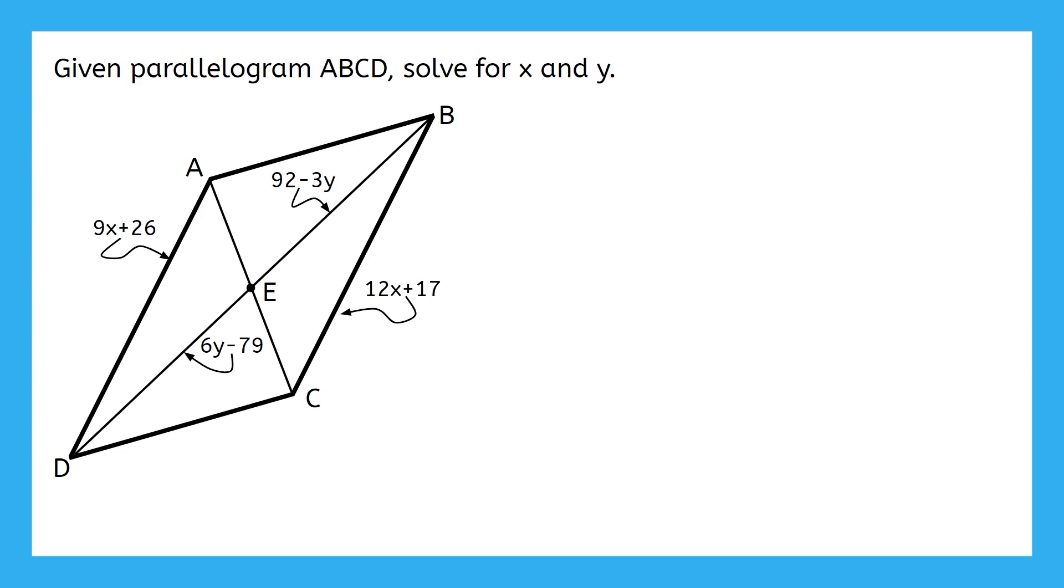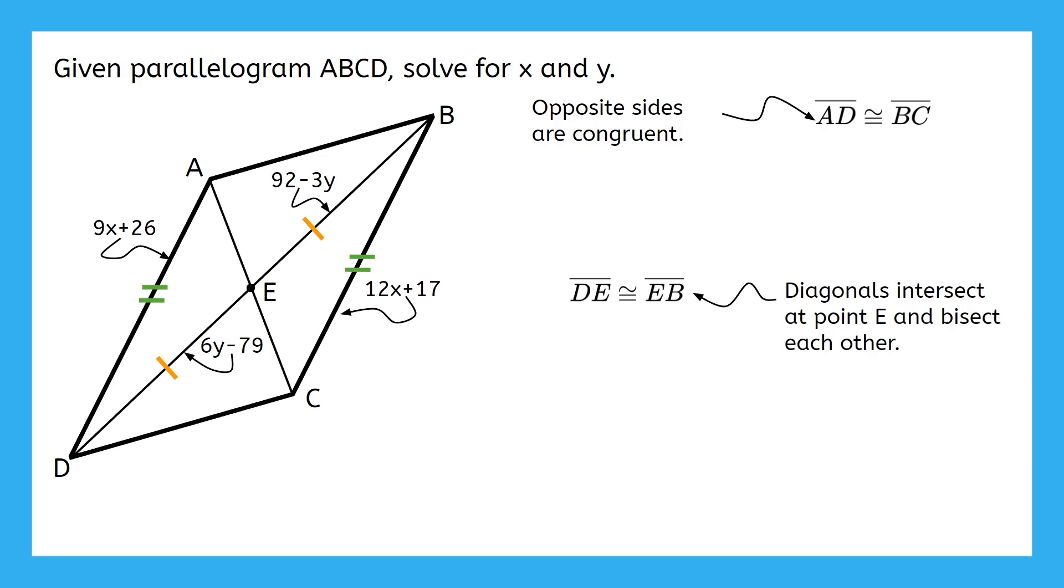Segments AD and BC are congruent because they are opposite sides of the parallelogram. Segments DE and EB are also congruent because they make up diagonal DB, which is bisected at point E by the other diagonal. Now that we have a set up for each of these congruences, pause the video here and try to finish up this problem by solving for X and Y.